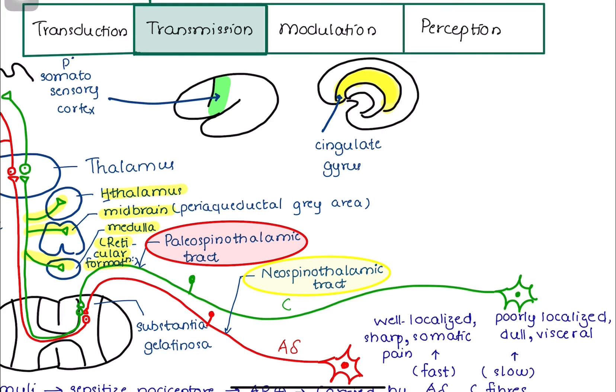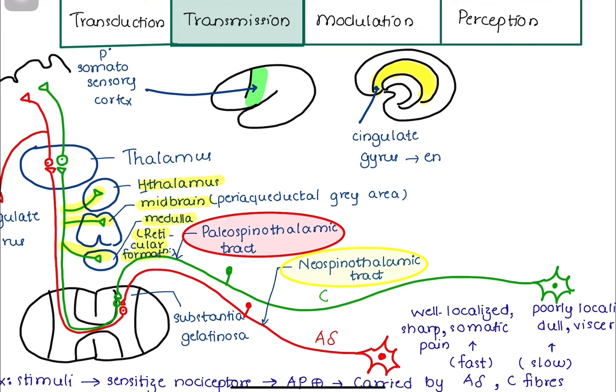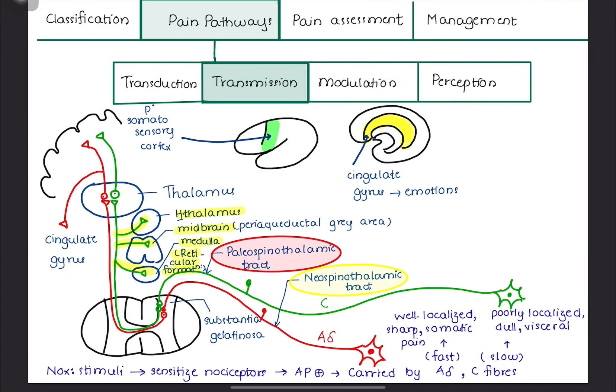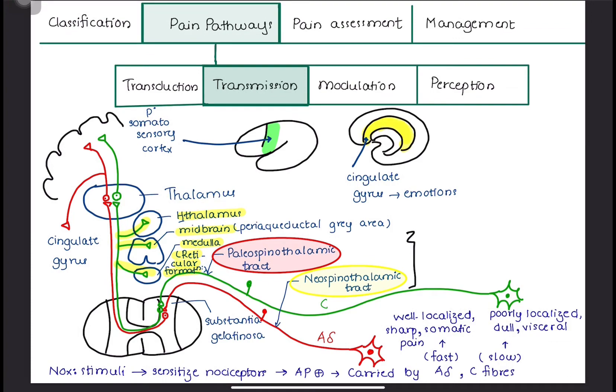Cingulate gyrus has a role in expressing emotions such as sadness and fear as a response to pain. These two pathways are components of the lateral spinothalamic tract.